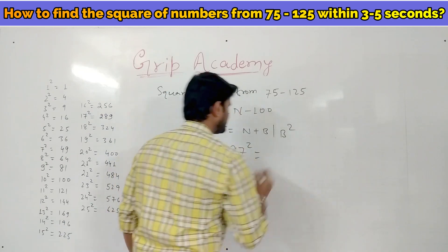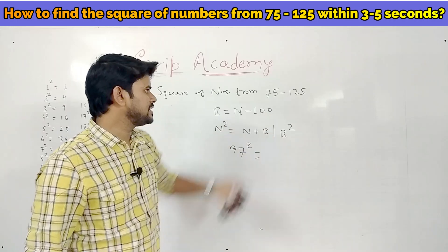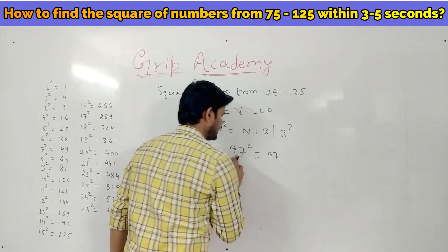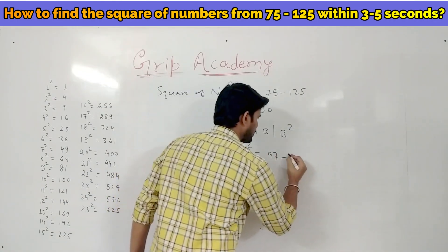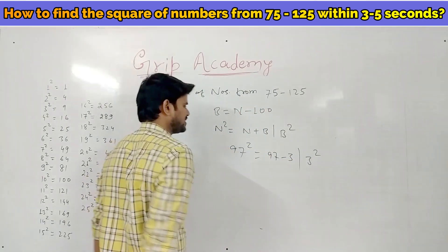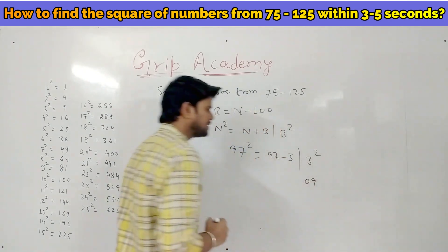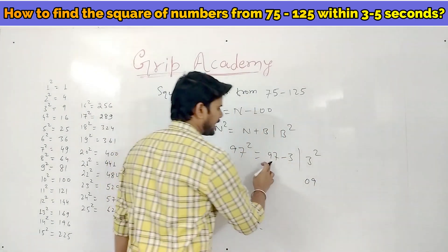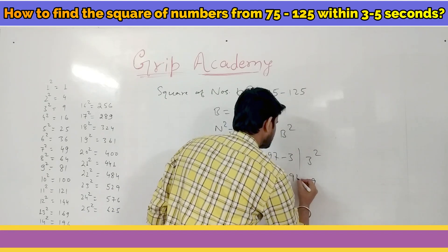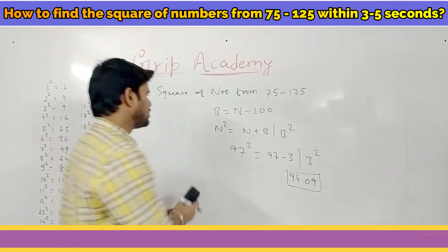Let's find the square of 97. Base is 97 minus 100 equals minus 3. So we get 97 minus 3, slash 3 squared. 3 squared is 9, written as 09. 97 minus 3 is 94. So the answer is 9409.